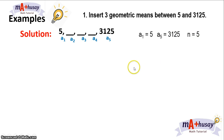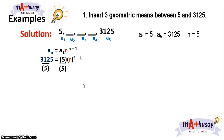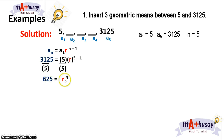To solve for the geometric means, we will use the geometric sequence formula. Substituting these values, we have 3,125 equals 5 times r raised to 5 minus 1. We divide both sides of the equation by 5, so we have 3,125 divided by 5 is 625, which equals r to the fourth power.